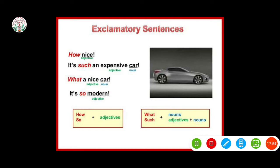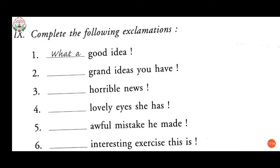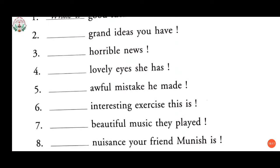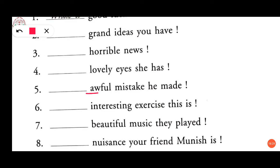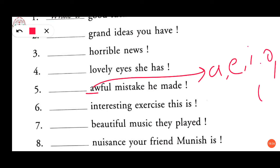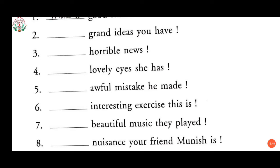Now come back to the exercise. The first question 'What a good idea!' is already done for you. Second: 'What grand ideas you have!' Third: 'What horrible news!' Fourth: 'What an awful mistake you made!' — we use 'an' here because 'awful' starts with a vowel sound. Sixth: 'What an interesting exercise this is!' Likewise we complete all exclamations this way.